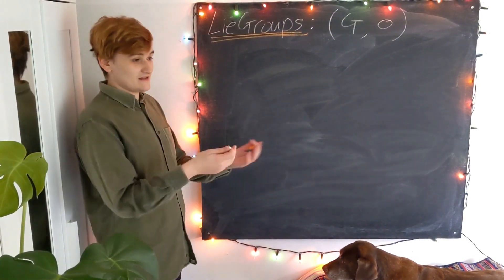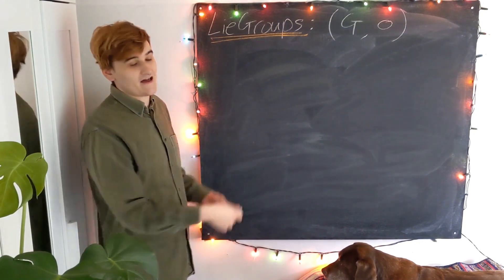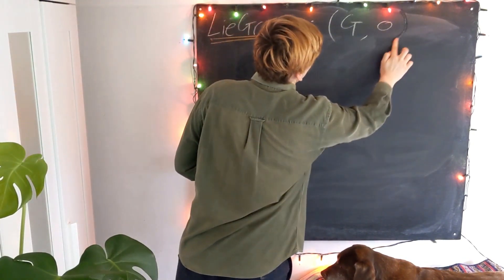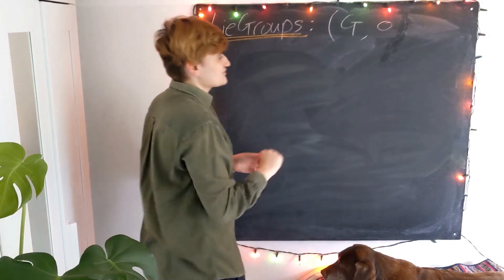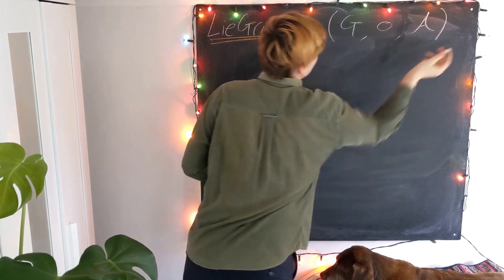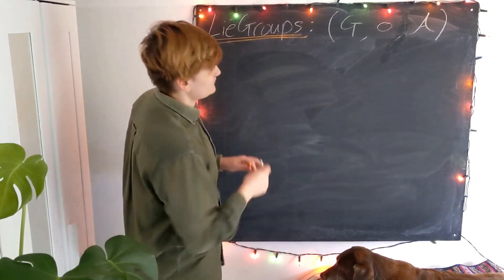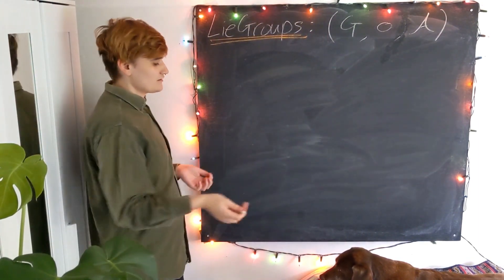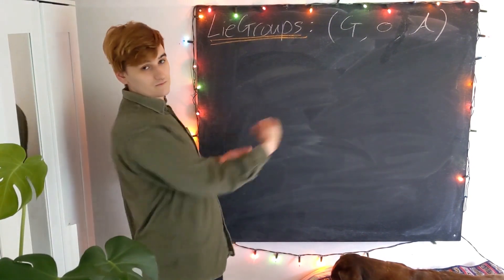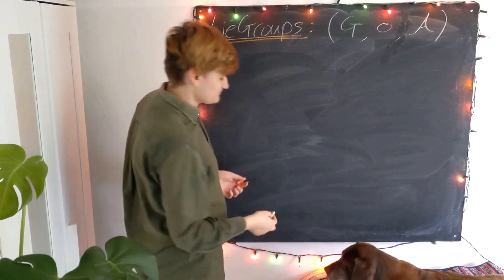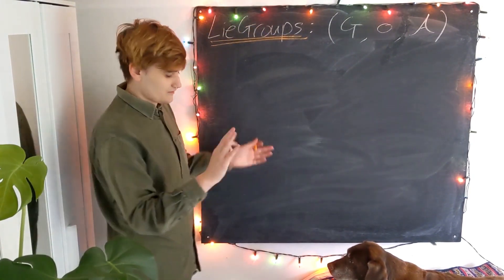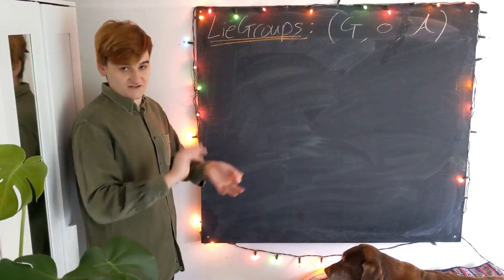And now a Lie group is essentially a set that is a group and also a manifold. So not only do we have a composition operation, we also have some kind of smooth atlas defined on the group. Don't worry too much about what this means exactly, it essentially just means that we can talk about the group in a smooth set of coordinates. So that's the kind of vague definition.